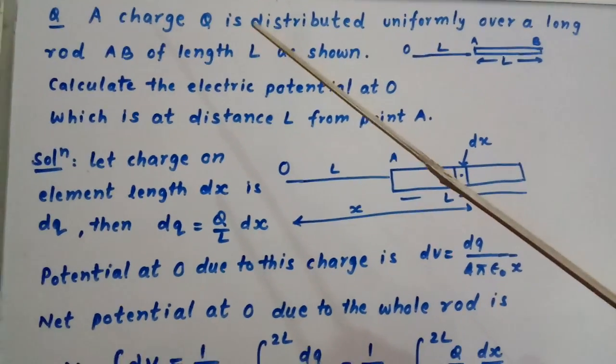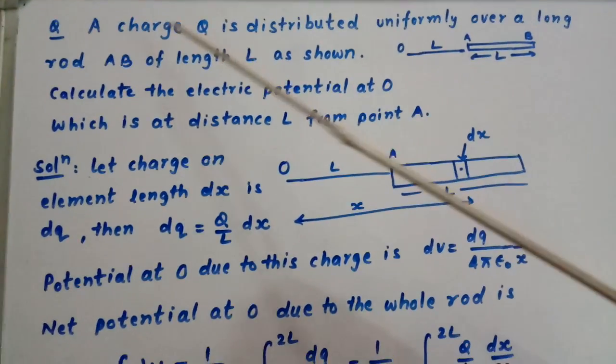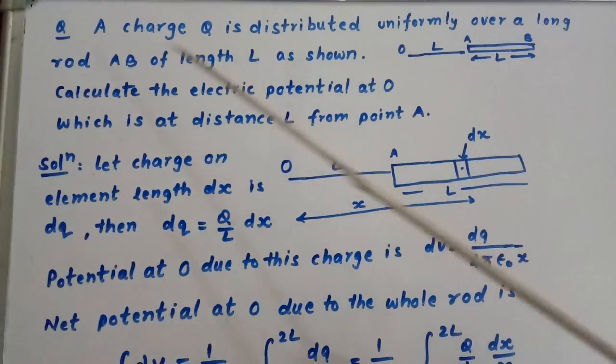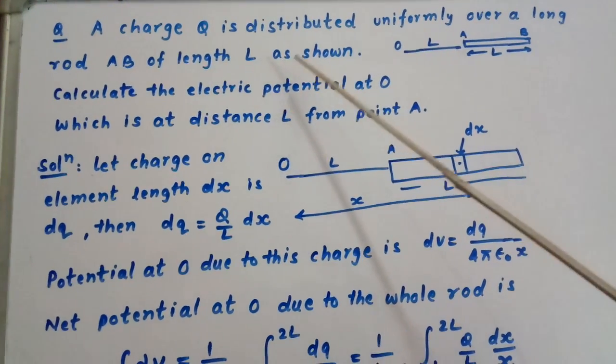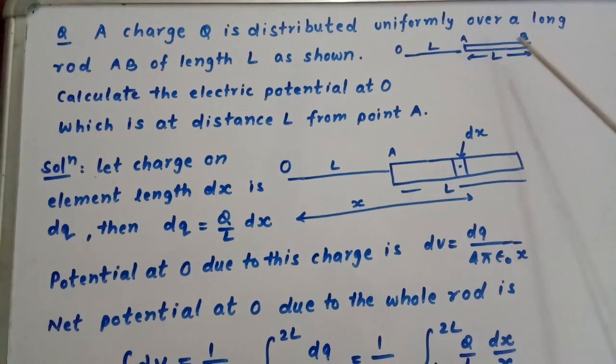Students, this is R. Kishan from IIT Shore. We are going to study one important problem from electrostatics. A charge capital Q is distributed uniformly over a long rod AB of length L as shown. This is rod L which contains charge capital Q.